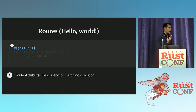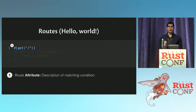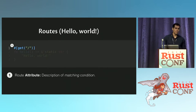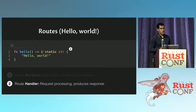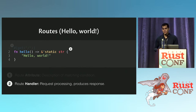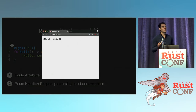What are you looking at? The first thing up top is an attribute — in Rocket we call it the route attribute, and it's a description of matching conditions. It tells Rocket these things have to be true for a web request to be routed to this route. In this case you need an HTTP GET request to the root path. The thing at the bottom is the route handler — just a function. It will be called if the route matches, it'll produce a response of an arbitrary type, and that's it. That's really what makes up Rocket applications: these routes.